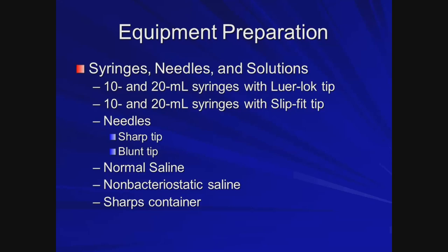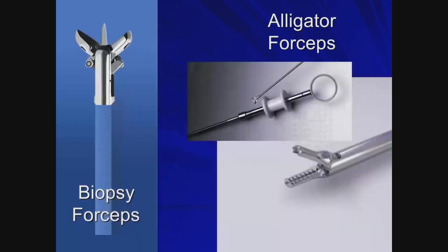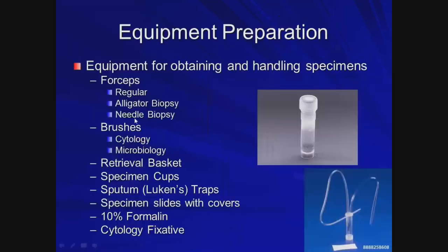Equipment needed includes lots of different needles and syringes — both luer-lock style and slip-fit tip designs. Both sharp-tip and blunt-tip needles are needed; blunt-tip needles have no bevel and are used to draw up medications. Normal saline, non-bacteriostatic saline, and a sharps container are required, along with various specialized equipment. There are different types of biopsy forceps, various brushes, retrieval baskets, and specimen cups or a Lukens trap for collecting samples.